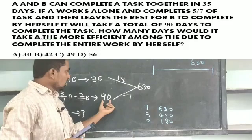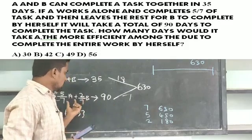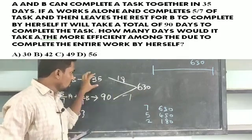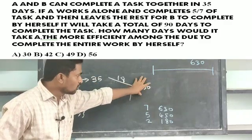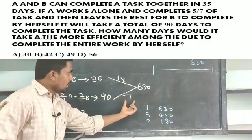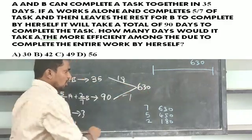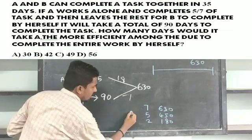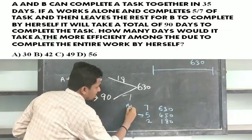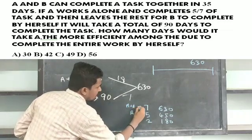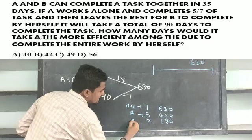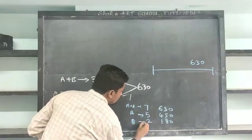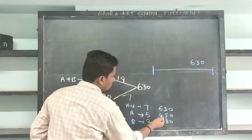If you make a total of 680, you can make a total of 680 and 680. You can make a total of 5. C is A plus B. The two things come together.